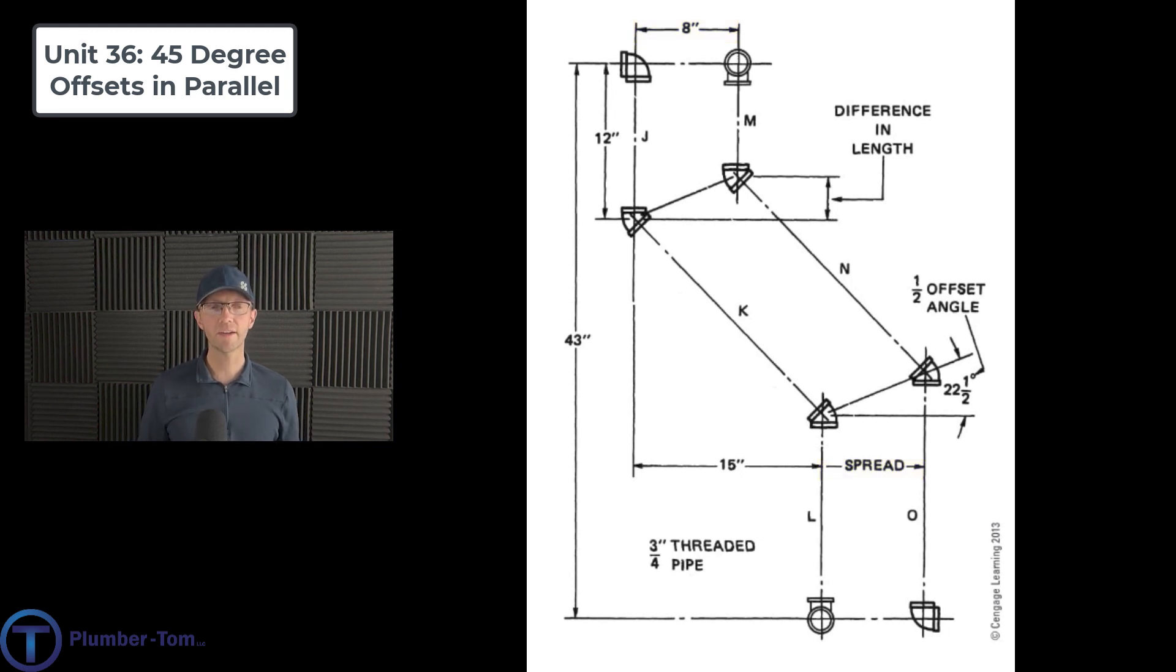Also notice down below here for our first offset J, K, and L that there is an offset measurement of 15 inches so that's going to be important as we're calculating. Down below here right next to that 15 you can see the word spread and that spread is the distance between centers of pipes as they're running along and we know that already, that's at the top here, that's 8 inches.